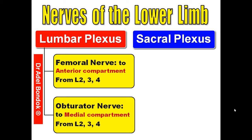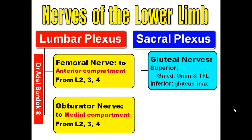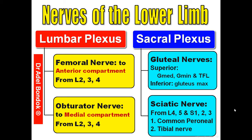The sacral plexus gives gluteal nerves — superior and inferior gluteal nerves. The superior gluteal nerve supplies gluteus medius, gluteus minimus, and tensor fasciae latae. The inferior gluteal nerve supplies the gluteus maximus. The second branch is the sciatic nerve, which arises from L4, L5, S1, S2, and S3. The sciatic nerve divides into two terminal branches: the common peroneal nerve and the tibial nerve.